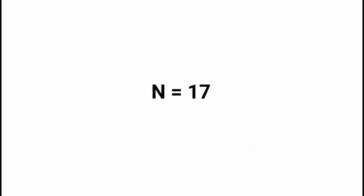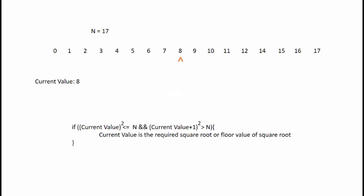Now take n equals 17. We consider the range 0 to 17 and find the middle element as 8. Since 8 squared is far greater than 17, the condition is not matched. We find the middle element between 0 and 8, which is 4. Since 4 squared equals 16, which is less than 17, and 5 squared (the next number) is 25, which is greater than 17, the condition is matched and the required floor value of the square root is 4.